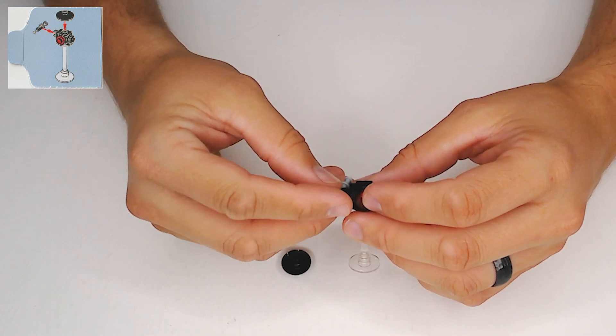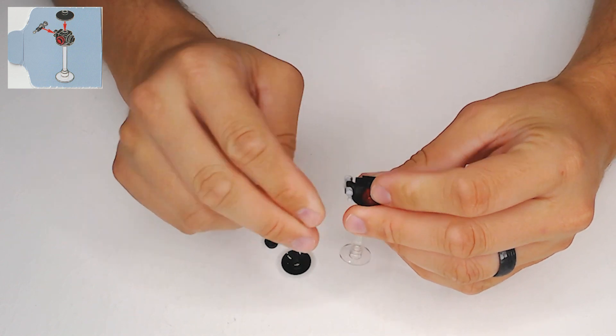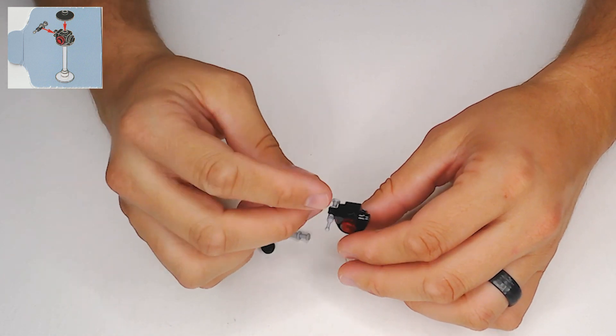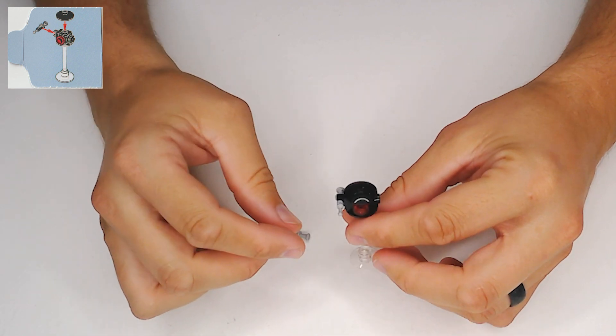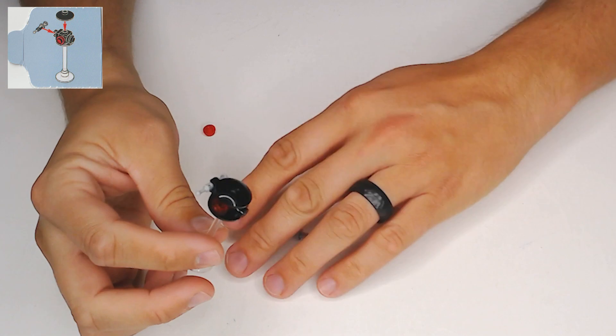And then we have this little serrated piece. And then put this other little bit in place like that on there. And that's all done.